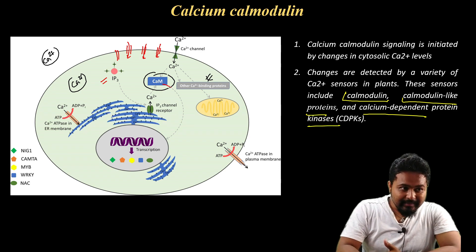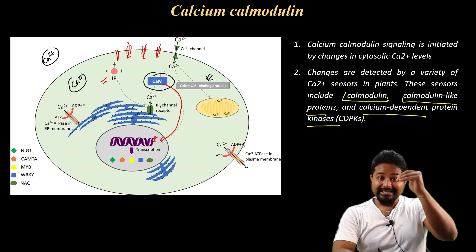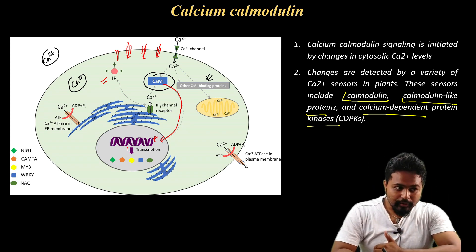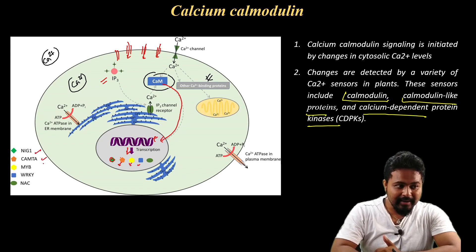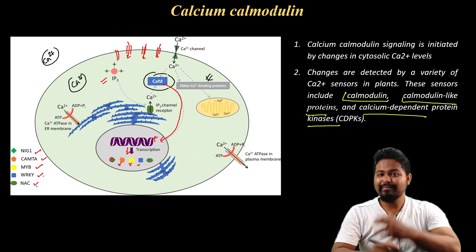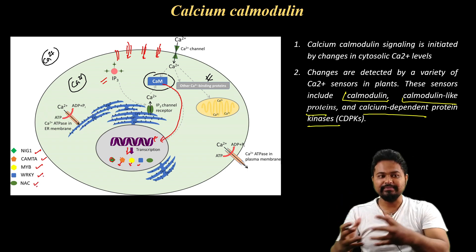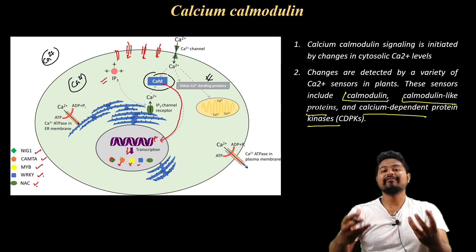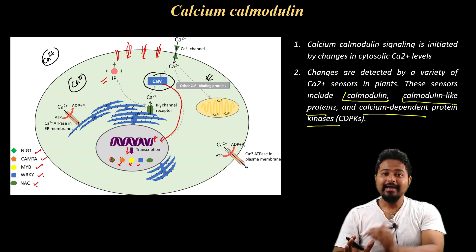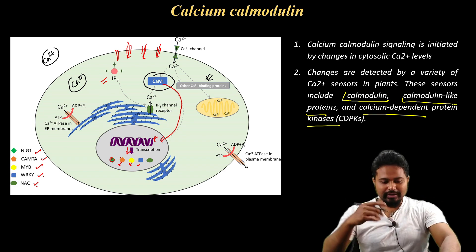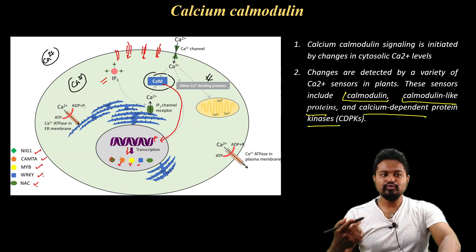When calcium signaling is active, DNA expression opens and transcription is initiated. These proteins and enzymes then form the cellular response. These enzymes help the response cells function. These roles are called calcium and calmodulin signaling roles.